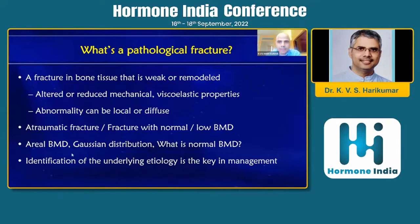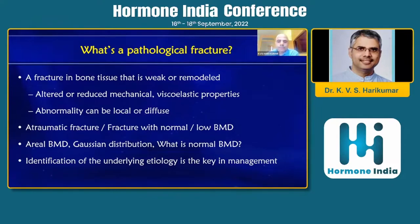This is the spectrum of pathological fractures and obviously you have different terms for this — atraumatic fracture, fracture with normal or preserved BMD, and all those things. As we know, the BMD in conventional terms is the aerial BMD, and anybody outside 2.5 standard deviations is considered abnormal. What exactly constitutes normal BMD or normal bone strength involves a lot of issues, and identification of the underlying etiology is the key in management.